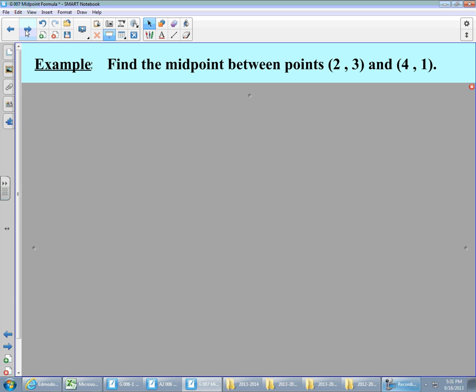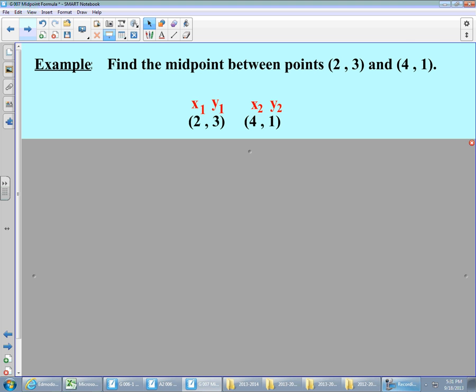Find the midpoint between points (2, 3) and (4, 1). Now there's a couple of things that I'm going to ask you to do that you may not have been ever asked to do before. One, anytime we use any of these formulas that have all this x1, y1, x2, y2 stuff in there, what I want you to do is I want you to take your two coordinates, in this case (2, 3) and (4, 1), and I want you to label them.